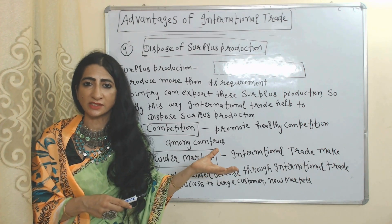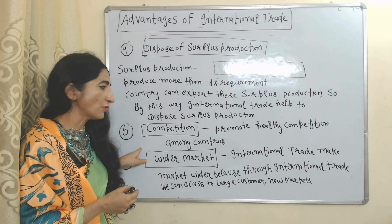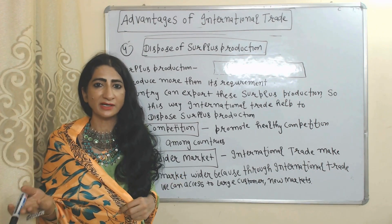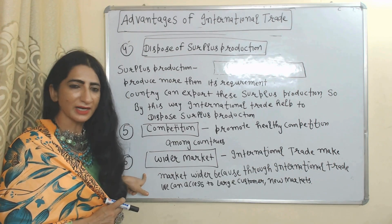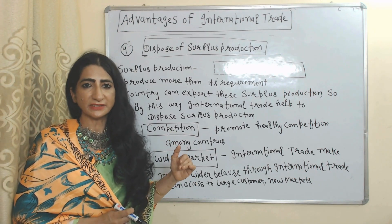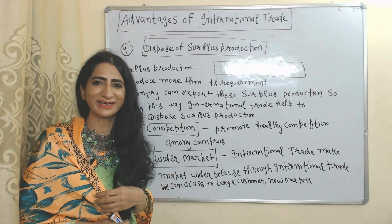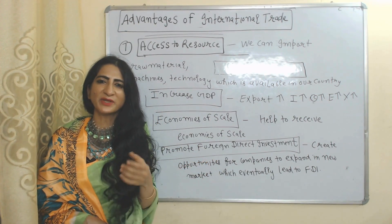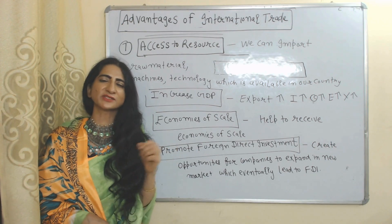Next advantage: dispose of surplus production. Surplus production means when you produce more than your requirement, you can export that surplus production and receive gain through international trade. Competition: international trade promotes healthy competition between countries, and healthy competition is good for economic growth. Wider market: international trade makes our market wider because we can reach more customers and more markets.